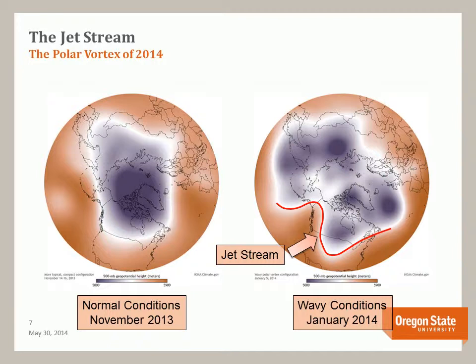These two images contrast a normal polar vortex versus the polar vortex position during the cold spell in 2014. Note that during the normal polar vortex, the polar low and cold temperatures are confined to the polar areas. With the weakening of the polar low, the cold air spreads, bringing cold, low-pressure systems further to the south. The movement of this air mass is related to the dropping of the jet stream, and the two likely influence each other — the cold air pushes the jet stream south, and the movement of the jet stream provides room for the polar vortex to move.